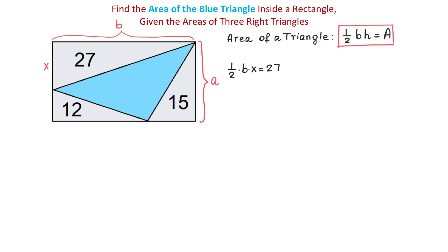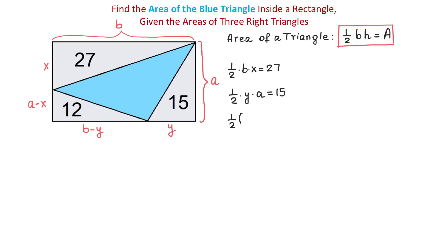Now let's take a look at the triangle whose area is 15 square units. In this triangle we can say that the height is A and let's call the base y. Then we can write that one half times y times A equals 15. If this side of the rectangle is B and this part is y, then this part will be B minus y. And if this side is A and this part is x, then this part will be A minus x. Then we can write that one half times (B minus y) times (A minus x) equals 12.